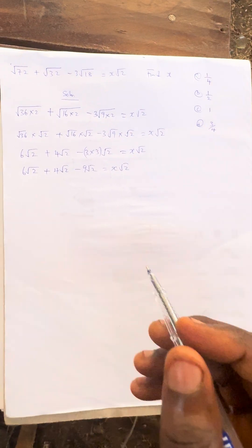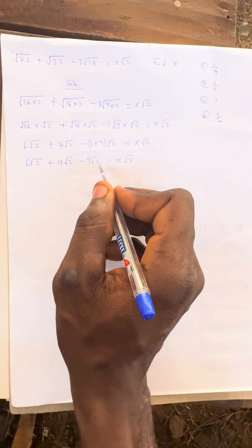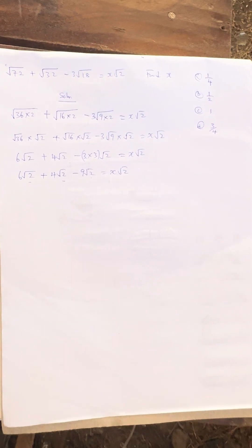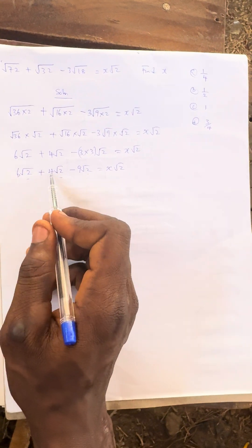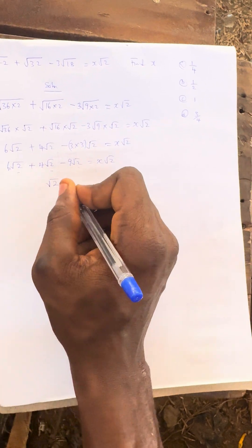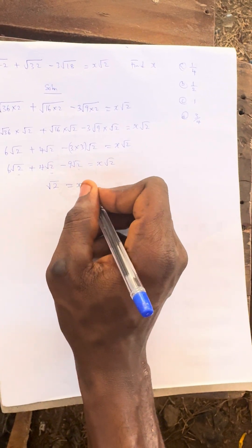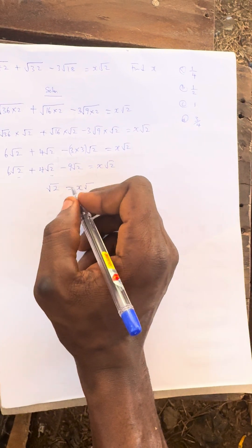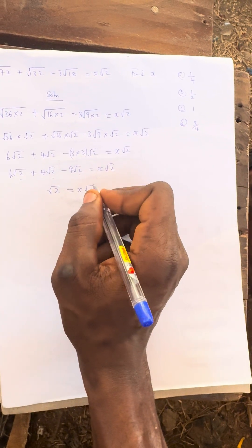If we check this, since all these processes have the same root, we can just do the arithmetic of the numbers at the front. 6 + 4 is 10, minus 9 is 1, so all this equals 1√2. 1√2 equals x√2.